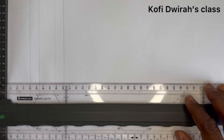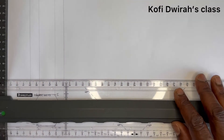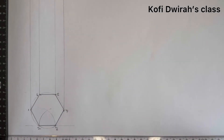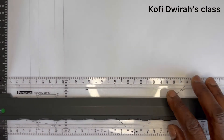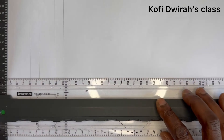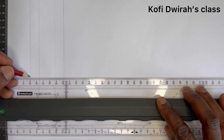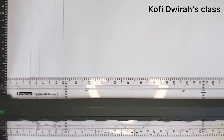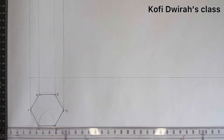We are going to draw the front view. At this point you move your T-square up to this end, and you draw another faint line from here to this side. So we have the baseline of the front view.